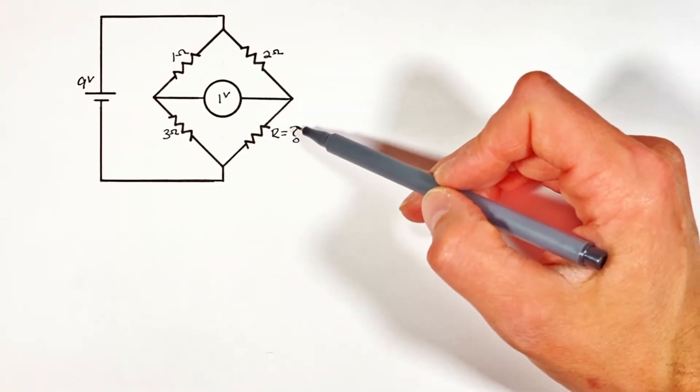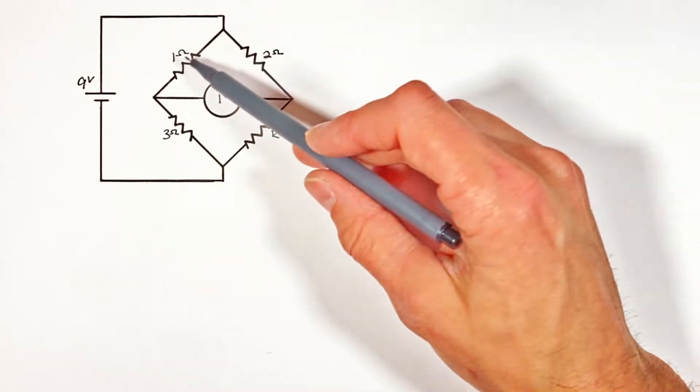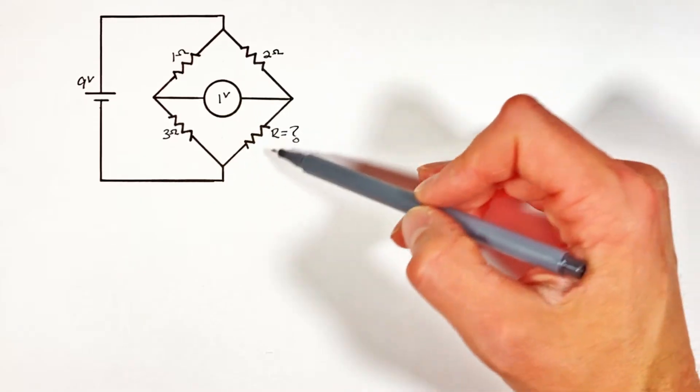All right YouTube, today we're taking a look at a Wheatstone bridge which is made up of three known resistors and one unknown resistor.